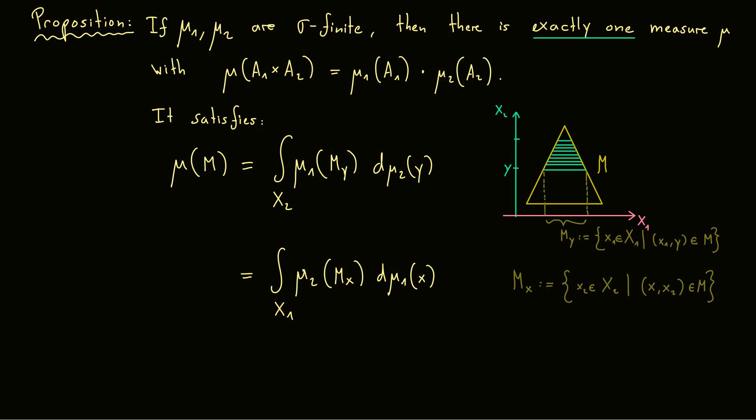What you have seen now, namely calculating the volume of a set M which is not a simple rectangle by using one integration and both measures mu1 and mu2, this is called Cavalieri's principle. And the visualization should always be in this sense. So you have sections in one direction and then you integrate in the other direction.